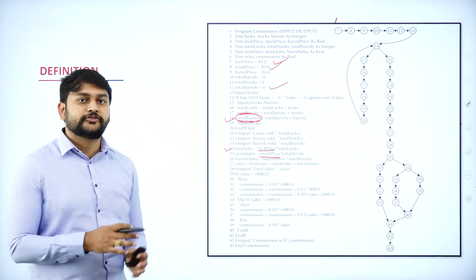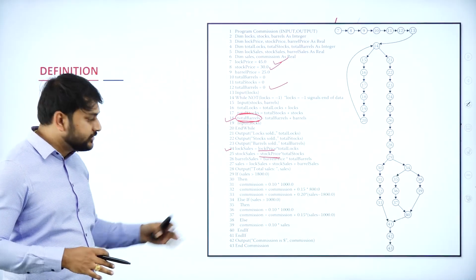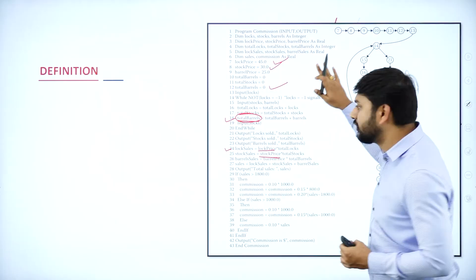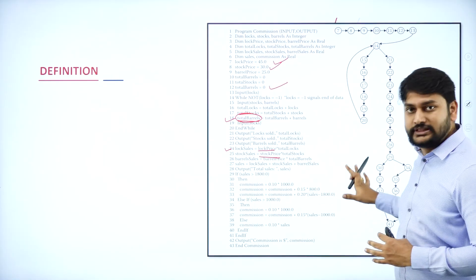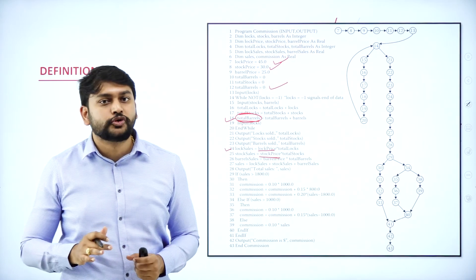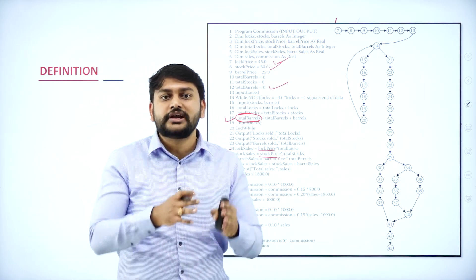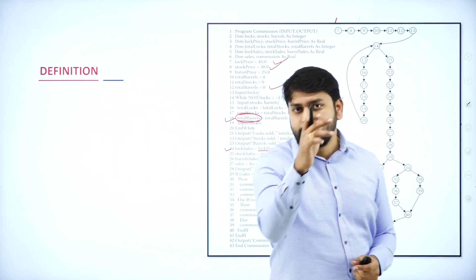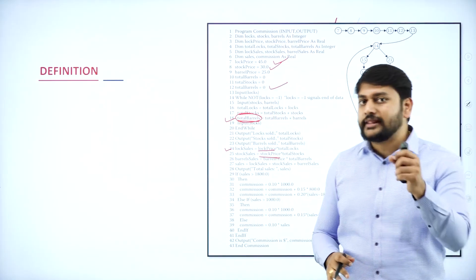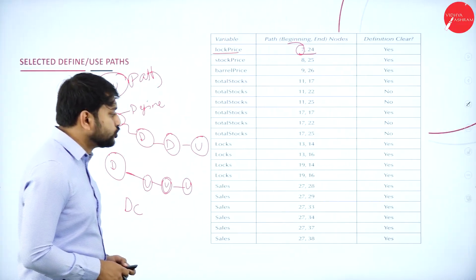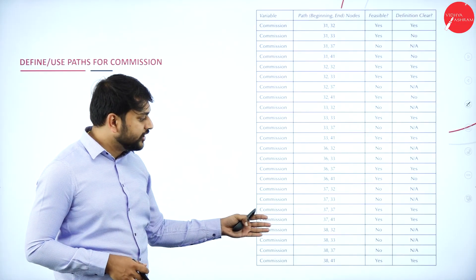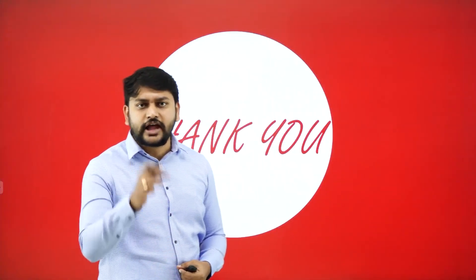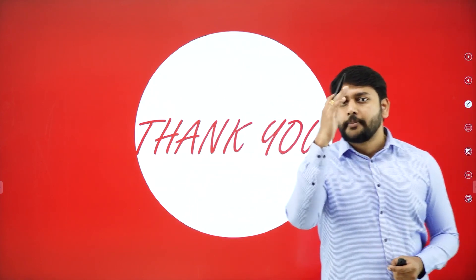Hope you understood definition use and definition clear with respect to the different variables. Your assignment: keep this program and this graph ready, and try writing the different DU paths and DC paths for all the variables. If you are able to do that successfully, you have a clear idea about DU path and DC path. I have also listed out the commission variable similarly. By saying this, I will be winding up this session. Bye bye, thank you.